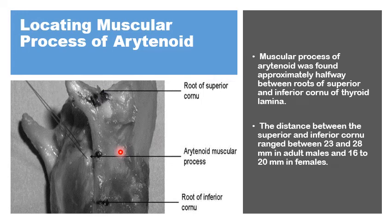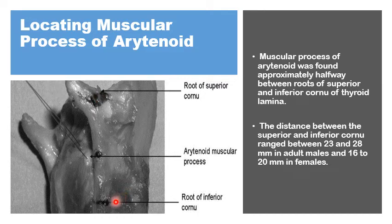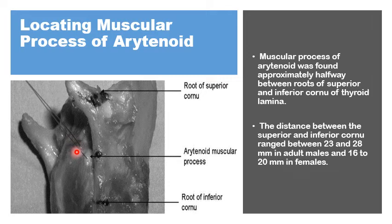Another way to check for the position of the muscular process from posteriorly is to mark the midpoint between the root of the superior cornu and the root of the inferior cornu — not the tip, just the root. This midpoint should correspond to the position of the muscular process of the arytenoid, through which a suture has been placed.